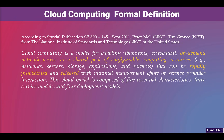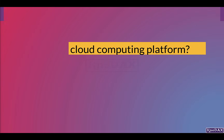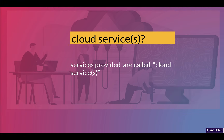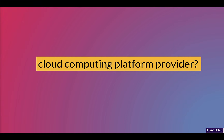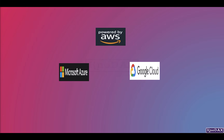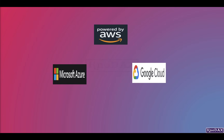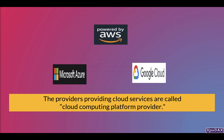There are several related terms to know. The backend system providing services is called the cloud computing platform. The services provided by the backend system over the internet are called cloud services. Providers such as AWS, Google, and Microsoft, which provide cloud services from their cloud computing platform, are called cloud computing platform providers.